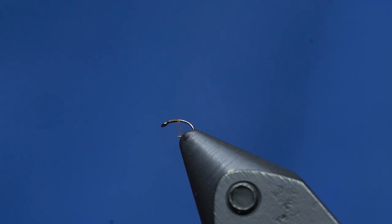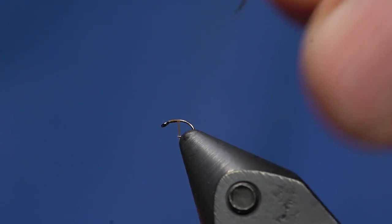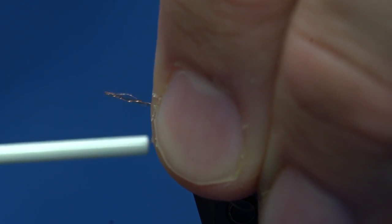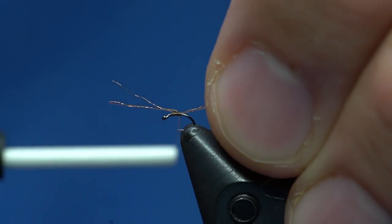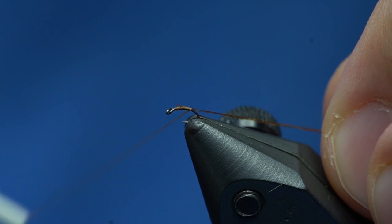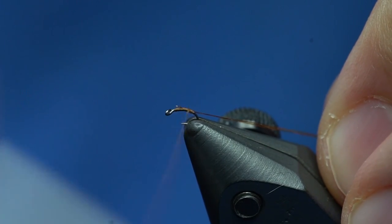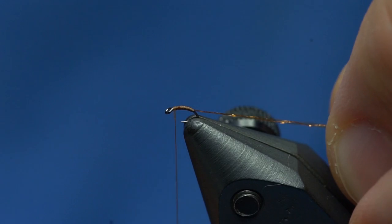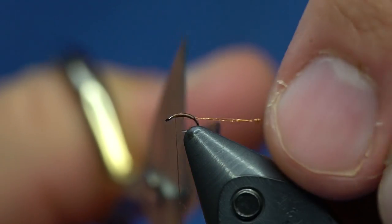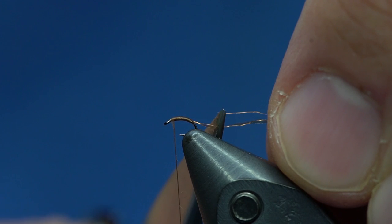Now I'm going to take some Veevus body quill in tan or golden brown. This is BQ8 that I'm using, and this is going to create the shuck. I'm going to tie it in a little bit long and pull it to length, then just wrap down the body and back up and let it sit right behind that eye. I used to put ribbing on these but I don't anymore. We're going to trim this about equal to the length of the body or maybe a little bit shorter.